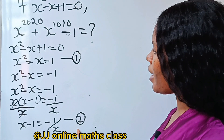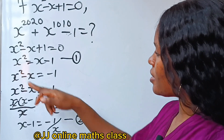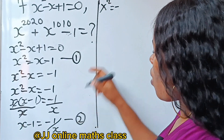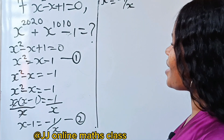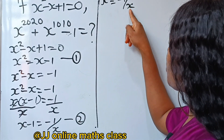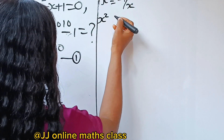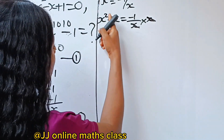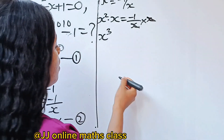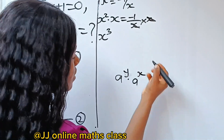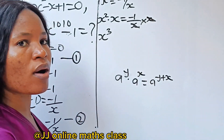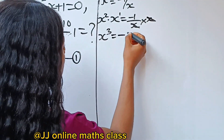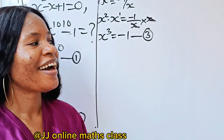Equation one says x squared equals x minus one, and equation two says x minus one equals minus one over x. Comparing them, x squared equals minus one over x. Multiplying both sides by x gives x cubed equals minus one — let's call this equation three.